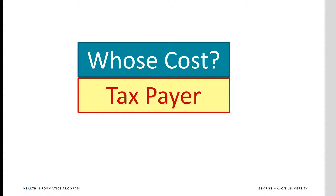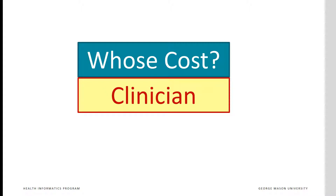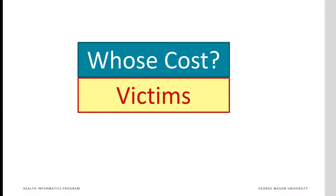The first question one has to answer is whose costs will be included in the analysis. Will it be the government agencies or the taxpayers' cost? Will it include the cost to the clinicians who now have to consider both probation issues and treatment issues? Or will it be cost to patients, including out-of-pocket costs, loss of privacy, increased monitoring, and the real additional cost of being found in technical violations of probation rules? Will it examine the cost to the society and the victims of crime?